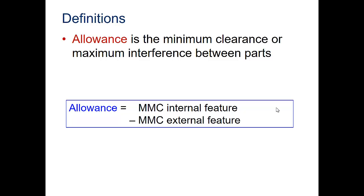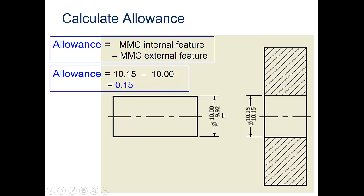Allowance is the minimum clearance or maximum interference between parts. That equation is MMC internal feature minus MMC external feature. For this clearance fit, the smallest the hole can be is 10.15, still larger than the biggest the axle can be, which is 10.00. The MMC internal would be 10.15. The MMC external would be 10.00. Subtract those two and you'd have .15. That would be the allowance between those two parts.